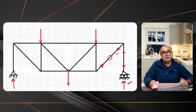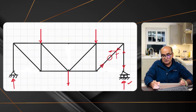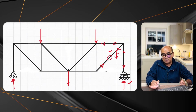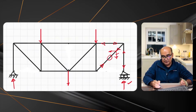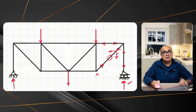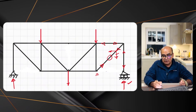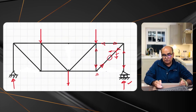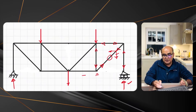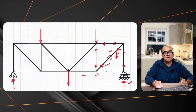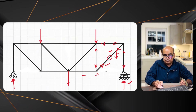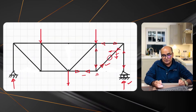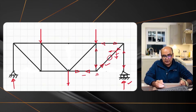For this member, the horizontal component is pointing towards the left. That means the horizontal force at the next joint should be pointing rightwards. At the top joint, we have a force pointing upwards; to balance it, we need a downward force. The horizontal component of the inclined member is pointing right, so the balancing component points left — indicating tension, which makes sense.